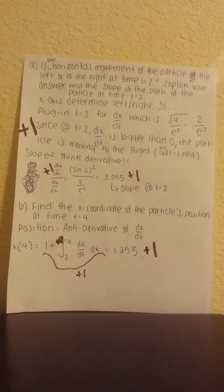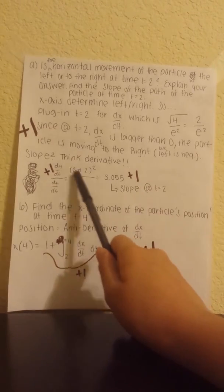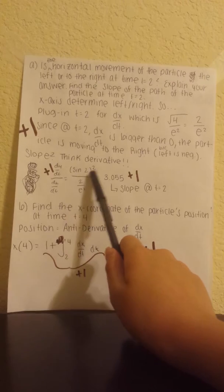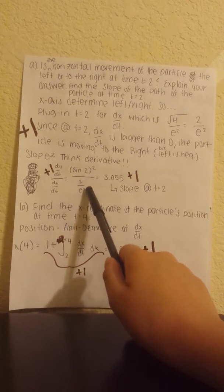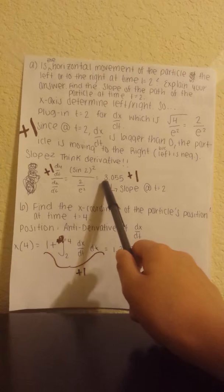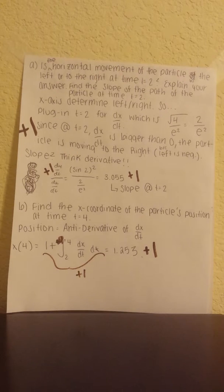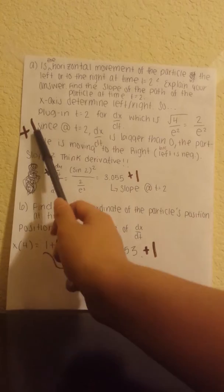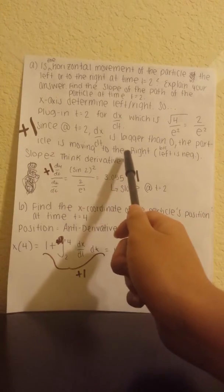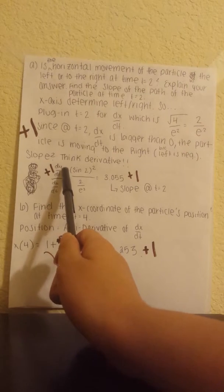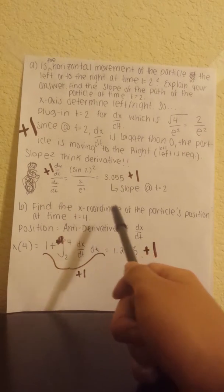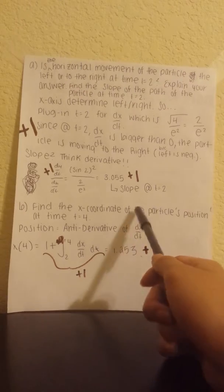When they're asking for a slope, we're going to think derivative, so dy/dt over dx/dt. Then we would plug our 2 in for dy/dt. We would get sine of 2 squared over 2 over e to the 2. And then we would get 3.055 for the slope at t equals 2. The points would come for one point for knowing that it's going to the right with the reason, one point for considering dy/dt over dx/dt, and then one point for the slope at t equals 2.